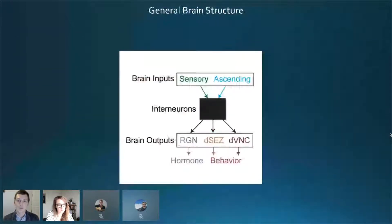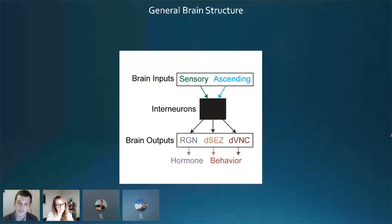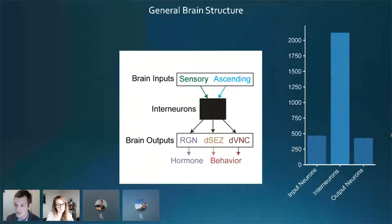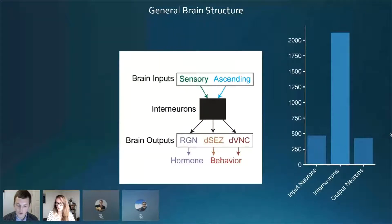We know the inputs and we know the outputs, but we don't really know what's going on in the black box at the center of the brain — the interneurons. It turns out they are the most numerous part of the brain; there are many more interneurons than there are input or output neurons. Understanding these neurons is clearly key to understanding the computations the brain performs. So the first thing we did was try breaking these interneurons into chunks — cell types — that we could understand.